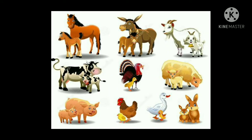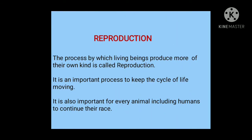There are many animals in our surroundings. You may have seen a cow feeding its calf or a dog feeding its puppy. Have you ever wondered how these young ones come into the world? How are they born? The process by which living beings produce more of their own kind is called reproduction. It is an important process to keep the cycle of life moving, and it is also important for every animal, including humans, to continue their race. This is how animals and other living beings have been living on this planet generation after generation with the help of reproduction.